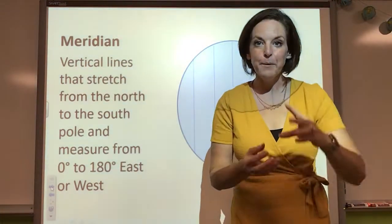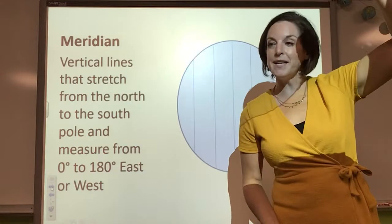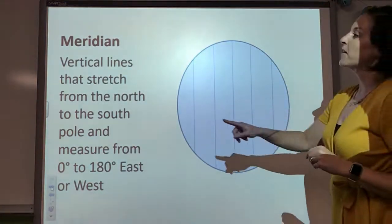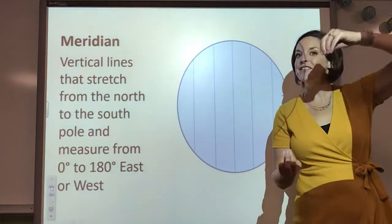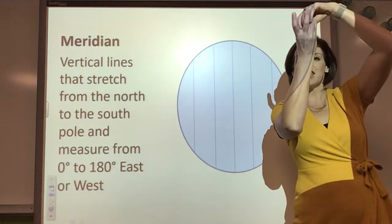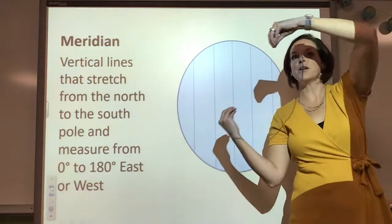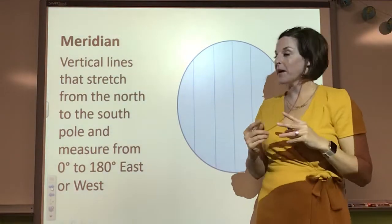So I just got done explaining for number two, the prime meridian. It's a meridian line. So these are vertical lines that stretch. They're also called longitudes. I think they're long lines that stretch. And they go around the earth.